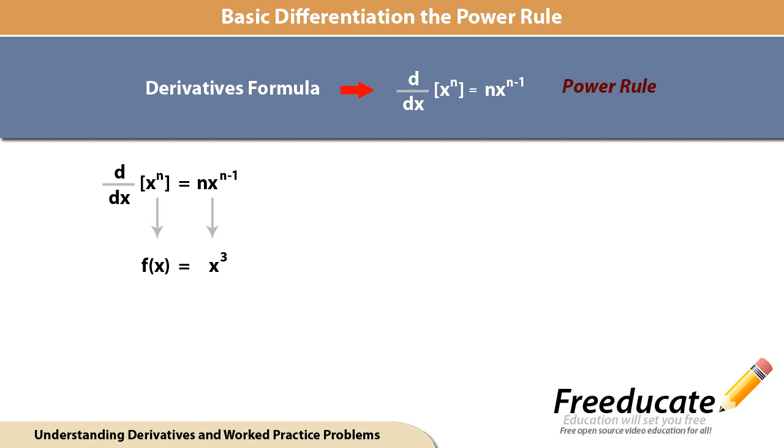All we're missing is the number out front, and the number out front is always going to be one unless there was a coefficient out there like two, three, four, or five. In this case, we just have simply x cubed. What we're going to do is take our three and multiply it by our invisible one out front—that's our coefficient.